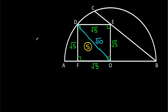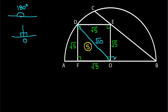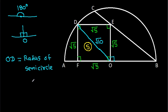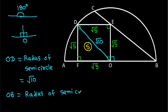Now, at point O the angle is 90 degrees, and OD is the radius of the semicircle, which is root 10. OB is also a radius of the semicircle, so OB will also be root 10.